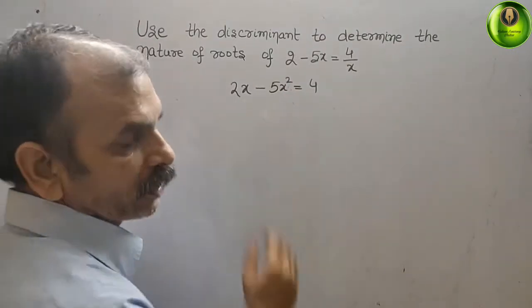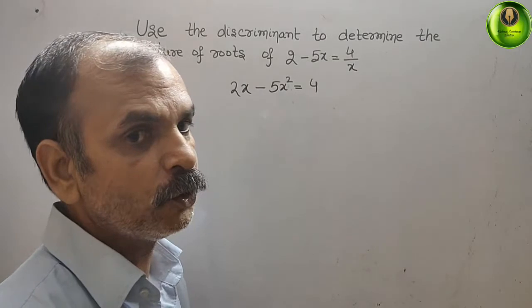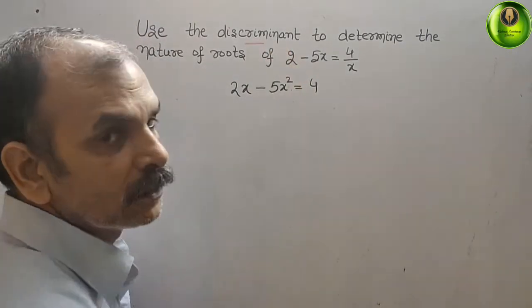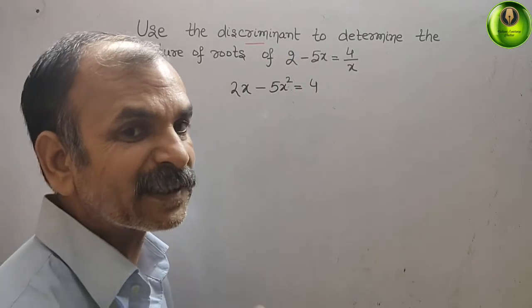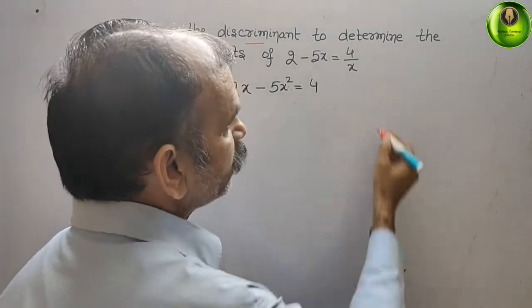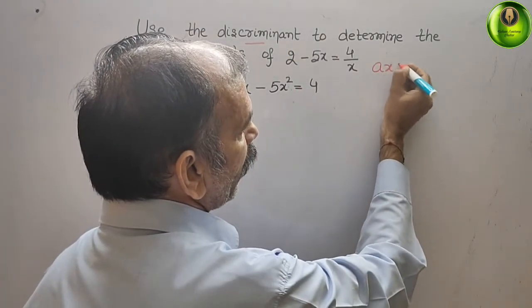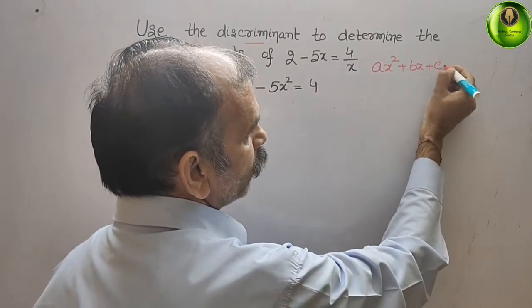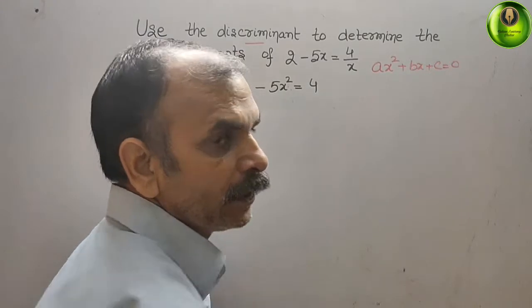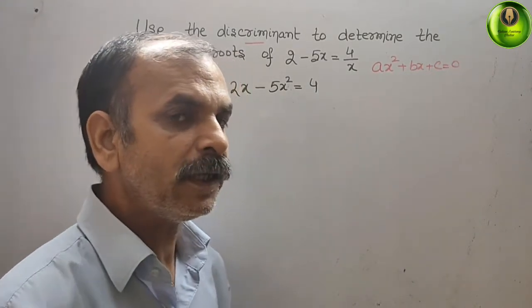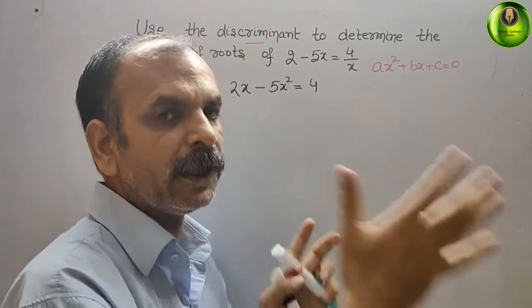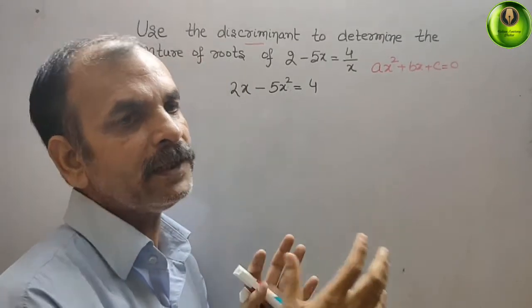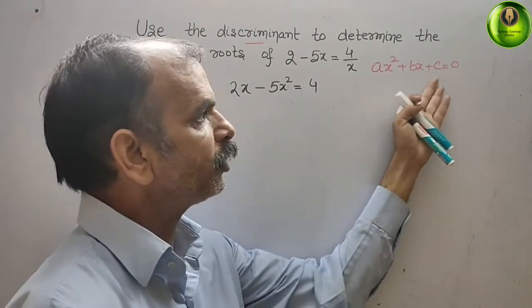So we got our equation. To determine the discriminant, we first have to write it in standard form, that is ax squared plus bx plus c equals 0. The powers should be in decreasing order, and we will rearrange so that everything is on the left side.